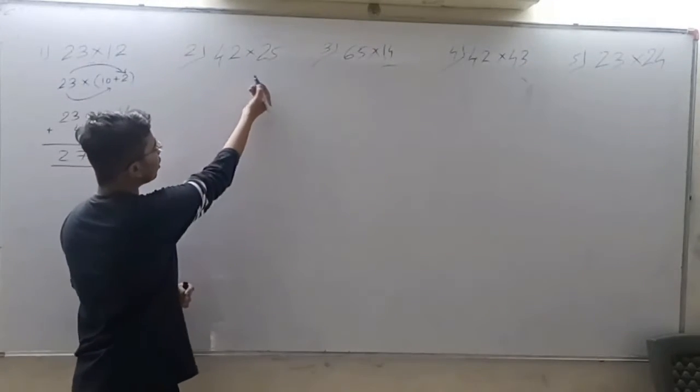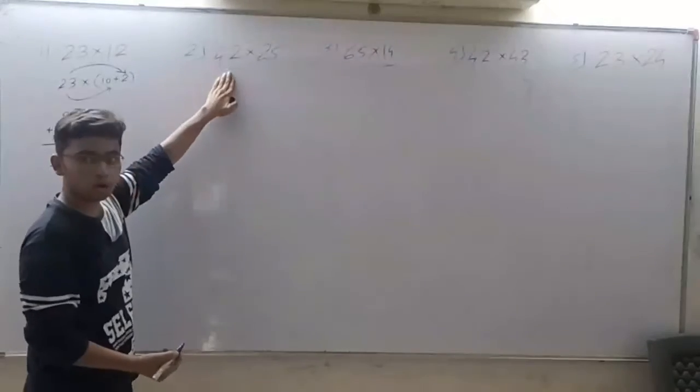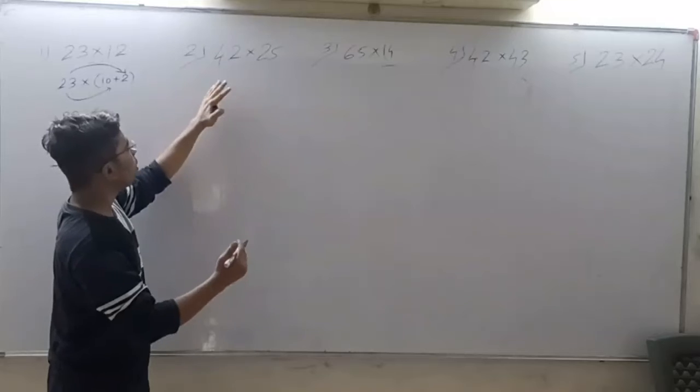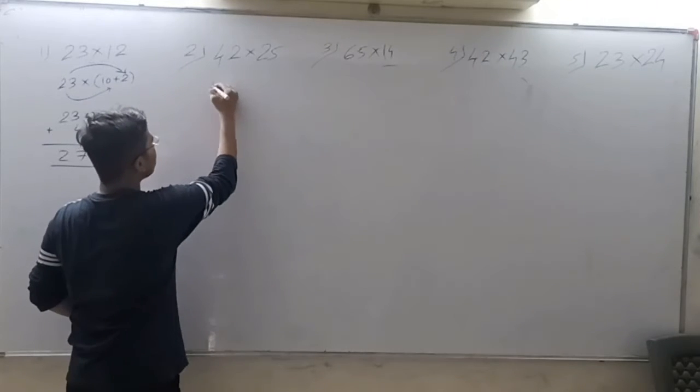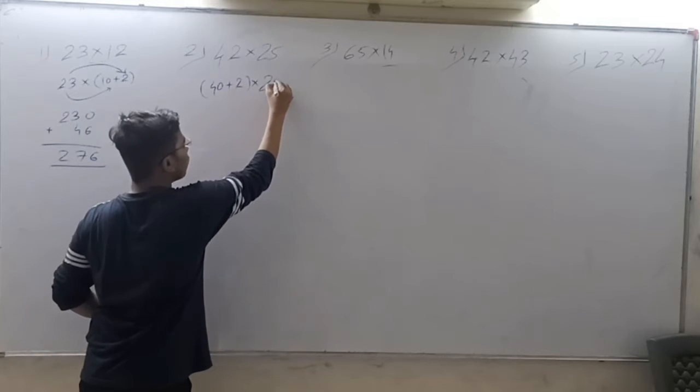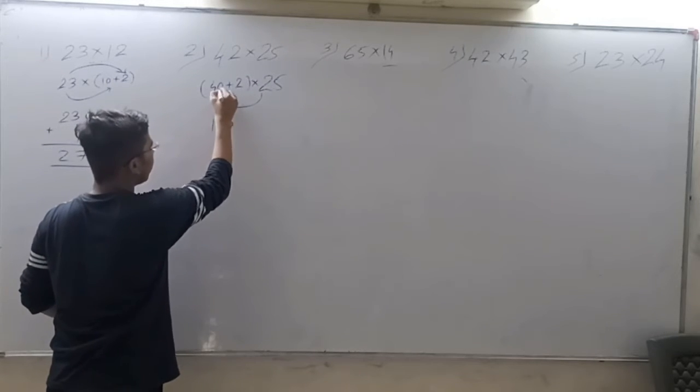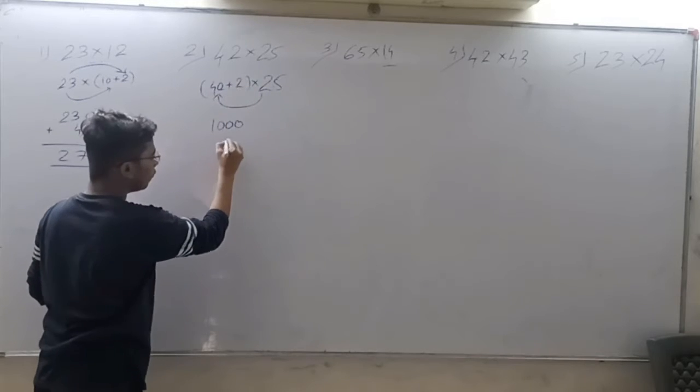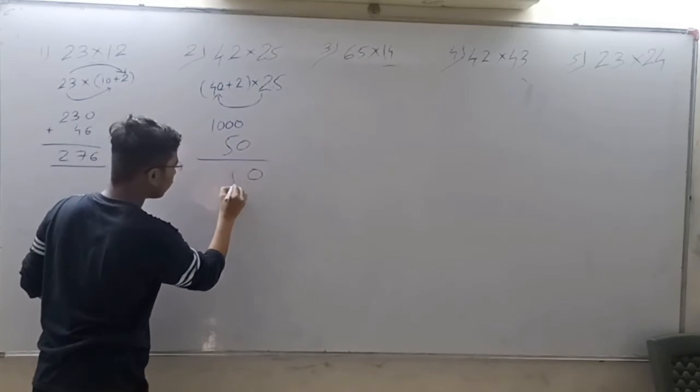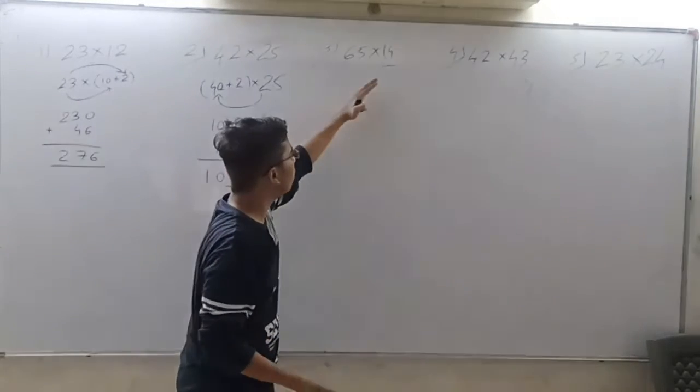Next step, 42 cross 25. This time we are going to break it as 40 plus 2 into 25. 40 times 25 equals 4 times 100, which is 1000. And 2 times 25 equals 50. So 1000 plus 50 equals 1050. Now 65 cross 40.